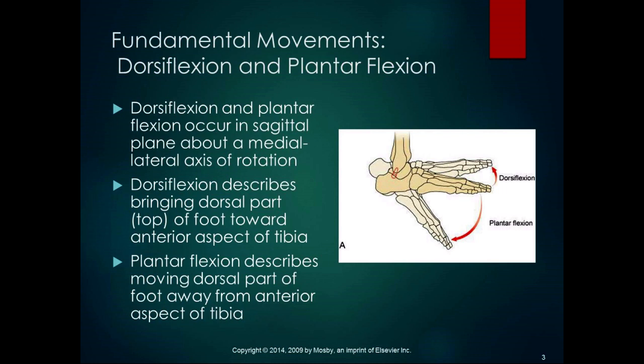Dorsiflexion and plantarflexion occur in the sagittal plane about a medial-lateral axis of rotation. If you drew a line straight through your medial and lateral malleoli, that's your medial-lateral axis of rotation. Dorsiflexion brings the dorsal part of the foot toward the anterior aspect of the tibia — bringing your toes toward you. Plantarflexion moves the dorsal part away from the anterior aspect of the tibia, bringing your toes away from you, also sometimes called pointing your toes.